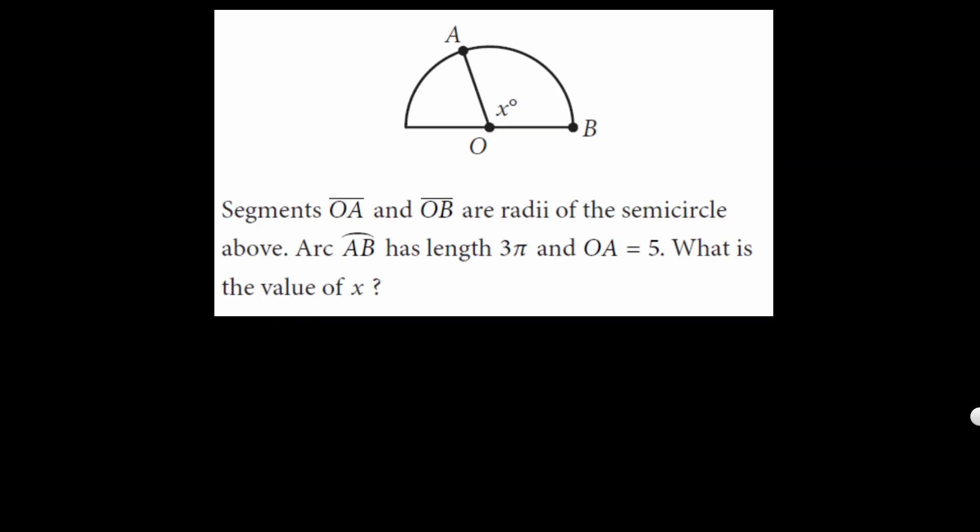Okay, we have a semicircle and the radius is 5, so I'm gonna label OA as 5. X is in degrees, and they say the arc length is 3π, so from here to here that's actually 3π.